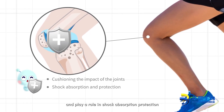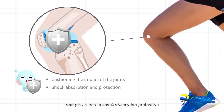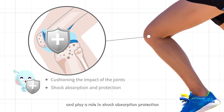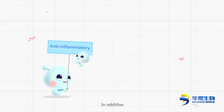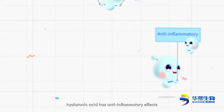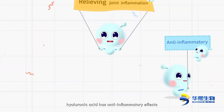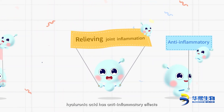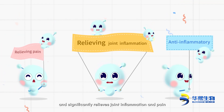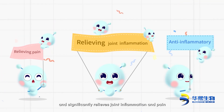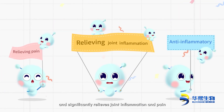Hyaluronic acid plays a role in shock absorption and protection. In addition, it has anti-inflammatory effects and significantly relieves joint inflammation and pain.